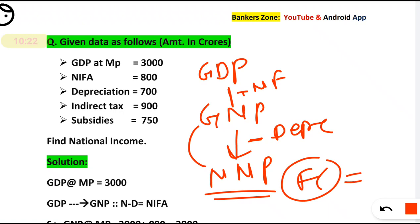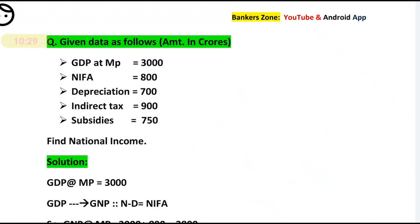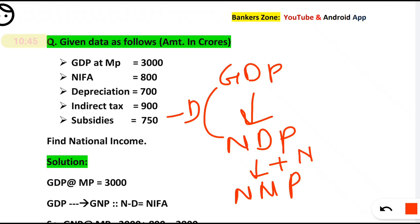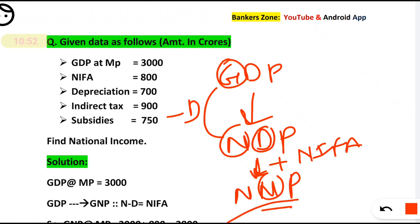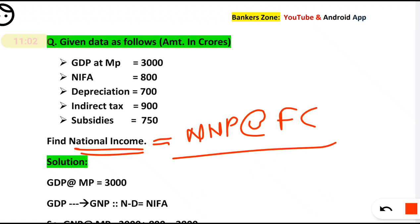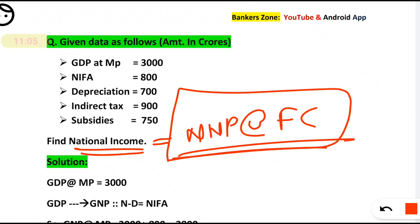Factor cost is nothing but market price minus net indirect taxes — very simple. The thumb rule is: national income is nothing but net national product at factor cost. We will discuss the same problems and more complicated ones in the next video.